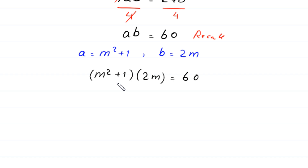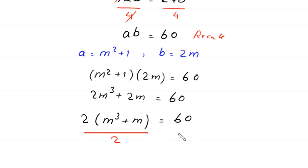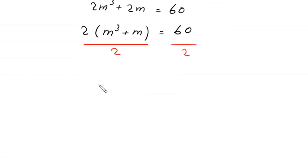Expanding: 2m times m² gives 2m³, and 2m times 1 gives 2m, so 2m³ + 2m = 60. We can factor out 2: 2(m³ + m) = 60. Dividing both sides by 2, we get m³ + m = 30.